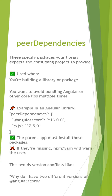Peer dependencies are basically what things we need to run this package. It specifies packages that every consumer of this package must provide. So basically what it provides — the parent app must install these packages. These packages should be available to run the project, which is very important if you are running any micro frontend or similar project.